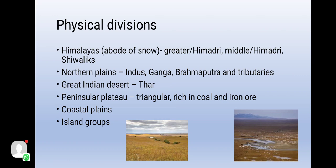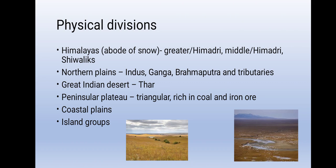Now we will talk about physical divisions. The Himalayas — the Greater Himalayas are known as the abode of snow, also called Himadri. Then there is the middle Himalaya, also Himadri, and the Shivalik, that is the outer Himalayas. Then we have the northern plains, where we can find India's Ganga, Brahmaputra and its tributaries.